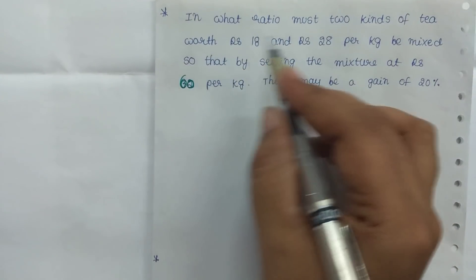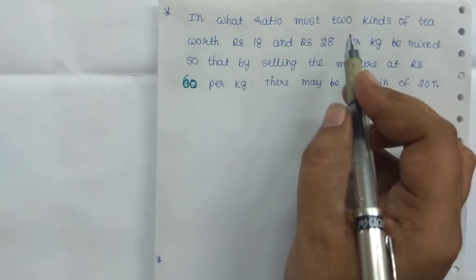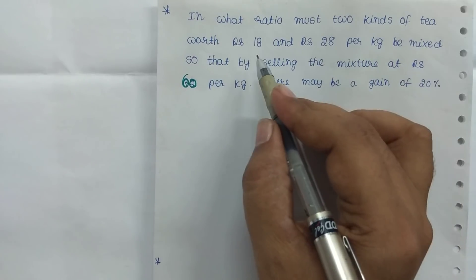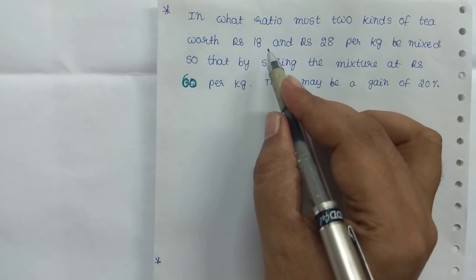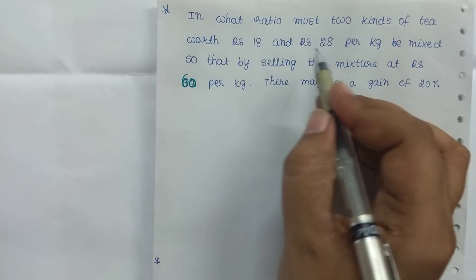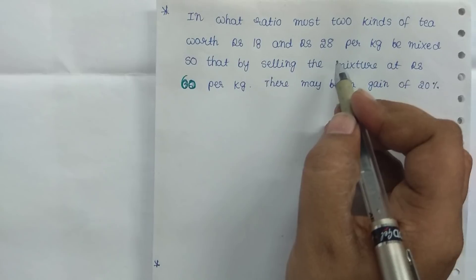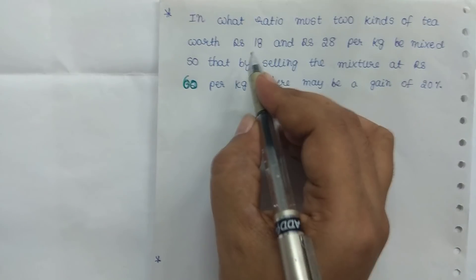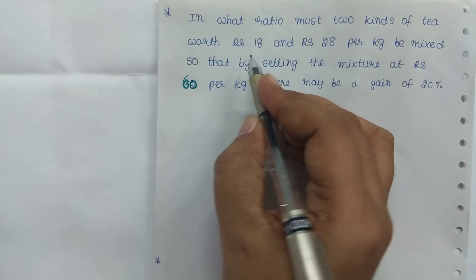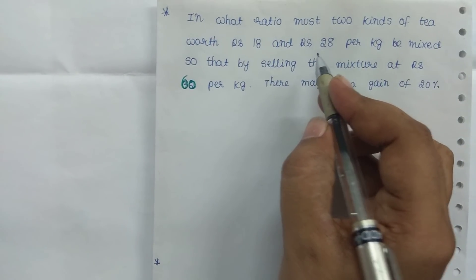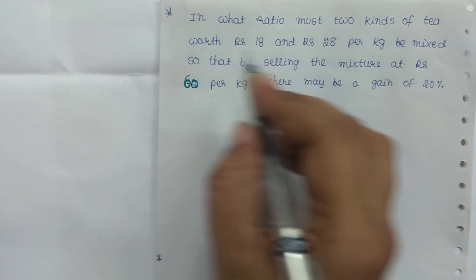In what ratio must 2 kgs of tea worth Rs. 18 and Rs. 28 per kg be mixed? 20 kg per kg ratio.